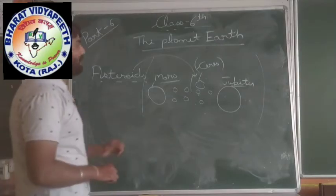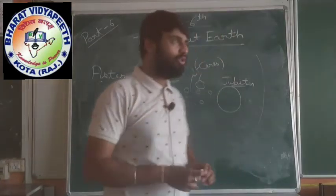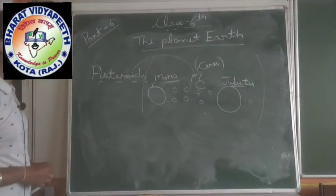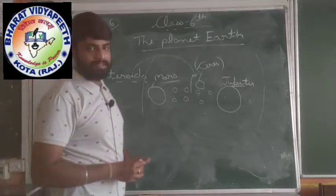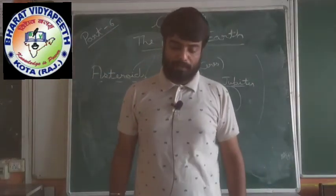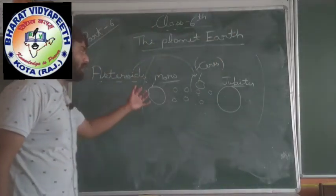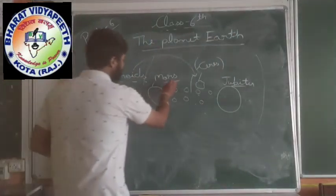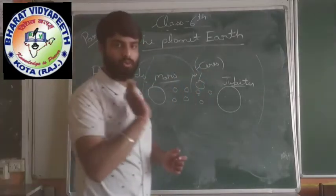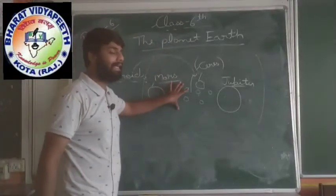Between Mars and Jupiter there are thousands of small bodies. They revolve around the Sun in the orbits between Mars and Jupiter.